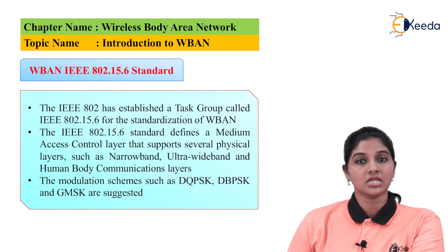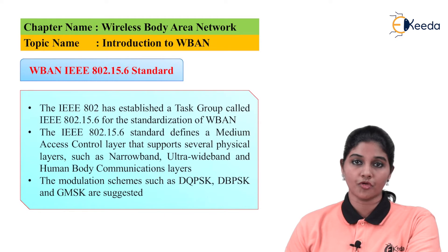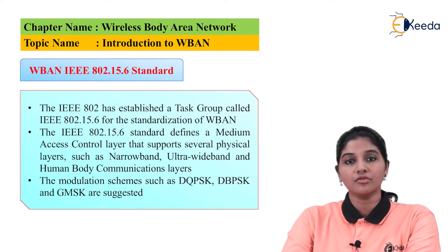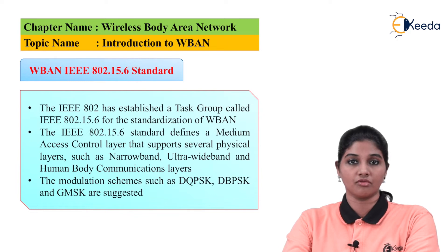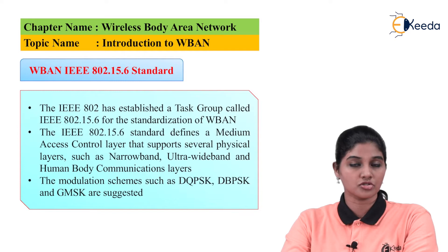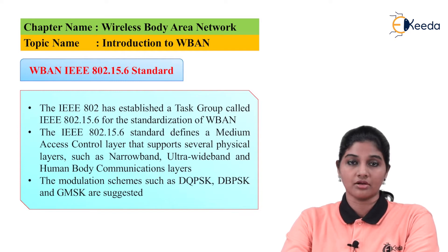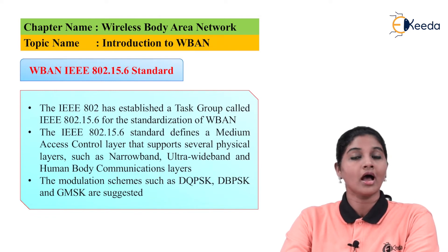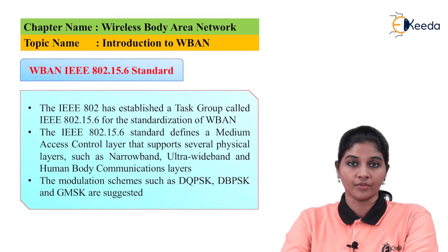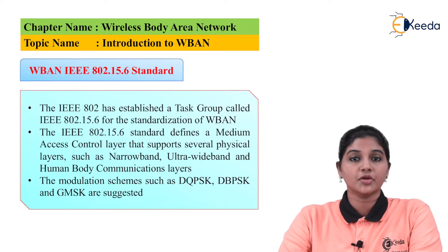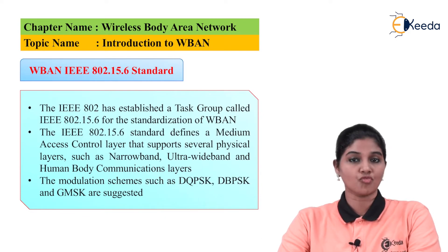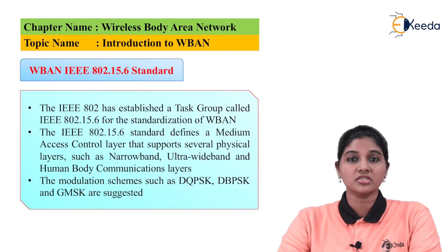Now let's talk about the standard defined by IEEE for wireless body area network. When computers want to communicate, data is transmitted across the network. Therefore, some rules, parameters, or procedures need to be defined by a standard so that data transmission and reception can take place properly. IEEE defines standards for all kinds of networks, whether wireless or wired, so that communication can take place in a proper manner.